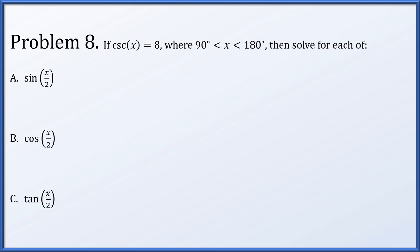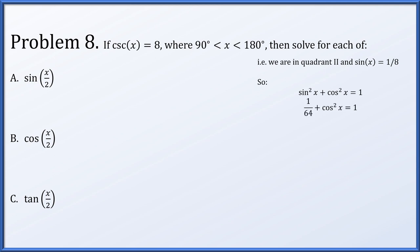In problem 8, if the cosecant of x equals 8 and x is between 90 and 180 degrees, we'll solve for each of the sine, cosine, and tangent of x over 2. We're in quadrant 2, and the sine of x is 1 eighth. Using the Pythagorean identity with our known value for sine of x, we solve that cosine of x is plus or minus root 63 over 8. But we're in quadrant 2, so cosine is negative, so we pick negative root 63 over 8, which simplifies to minus 3 root 7 over 8.